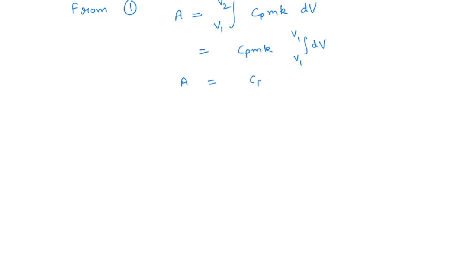cp times m times k times V2 minus V1. From here we can say that cp equals area divided by mk times V2 minus V1.